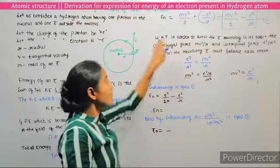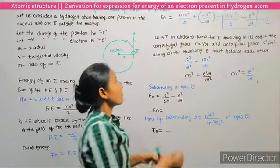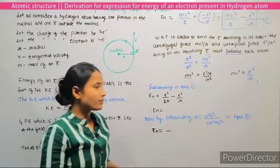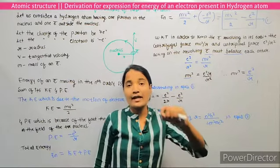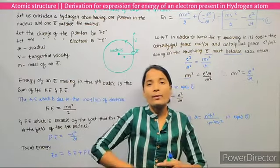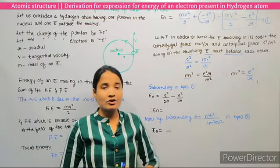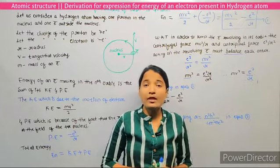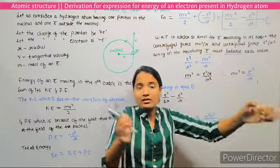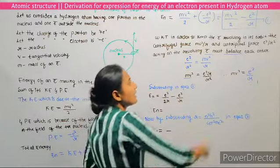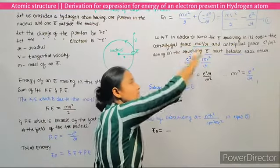Now, in order to keep the electron revolving in its orbit, the centripetal force and centrifugal force acting on the revolving electron must balance each other. The centripetal force equals e²/r² and this equals mv²/r, so setting F1 equal to F2: e²/r² = mv²/r.